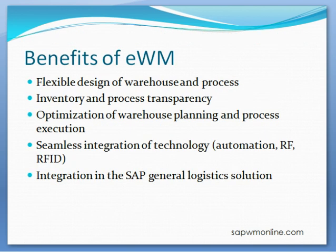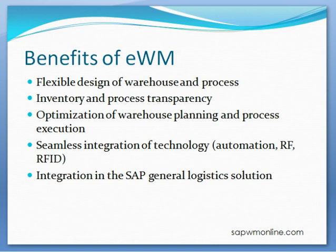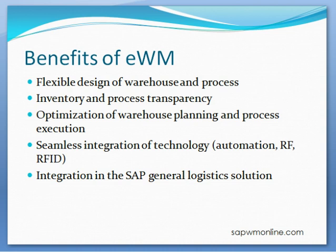SAP EWM offers many advantages due to its different design. The main processing areas are inbound processing, storage and operations, and outbound processing. In addition, there are general processes like resource and labor management, cross docking, yard management, import-export of dangerous goods, compliance, and native technologies like RF, RFID, pick by voice, and material flow system. Some key advantages include more flexibility than standard WM to design inbound and outbound processes, inventory and process transparency, optimization of warehouse planning and process execution, seamless integration of technology, and integration in the general logistics solution.